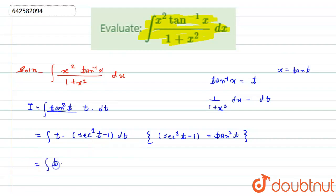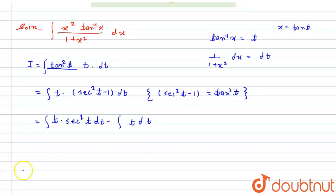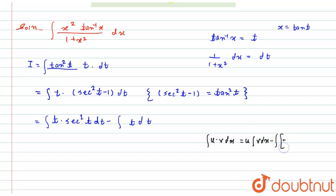Separating the integration, it becomes: integration of t times sec squared of t dt, minus integration of t dt. Now I will apply the u times v formula for integration by parts.